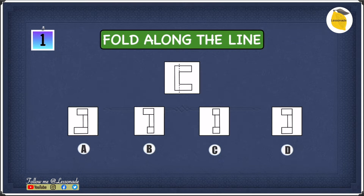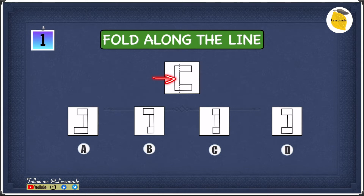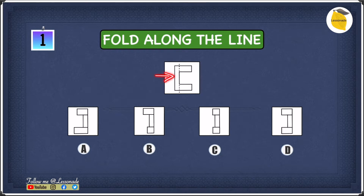If you notice in A, B, C, and D, these two flaps appear to be on the other side of the fold line — always on the left hand side of the fold line. This means the flaps are being folded from right to left, because that's why they appear on the other side of the fold line.